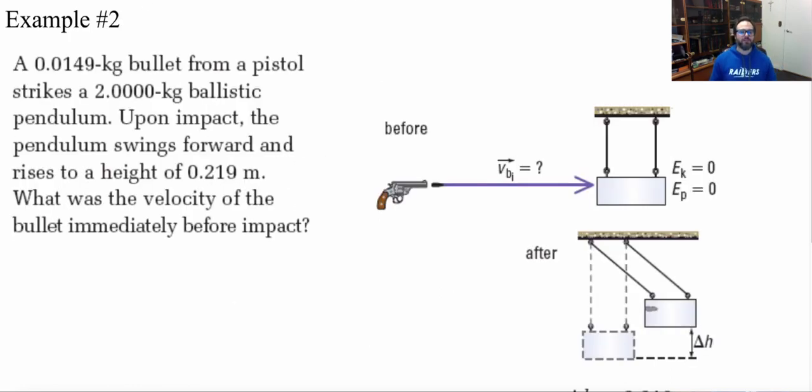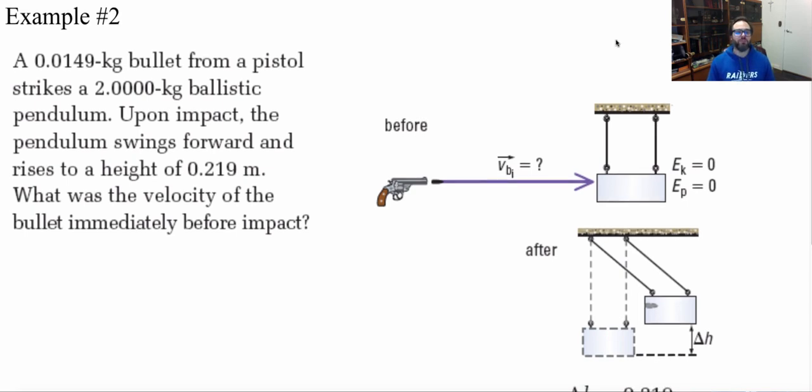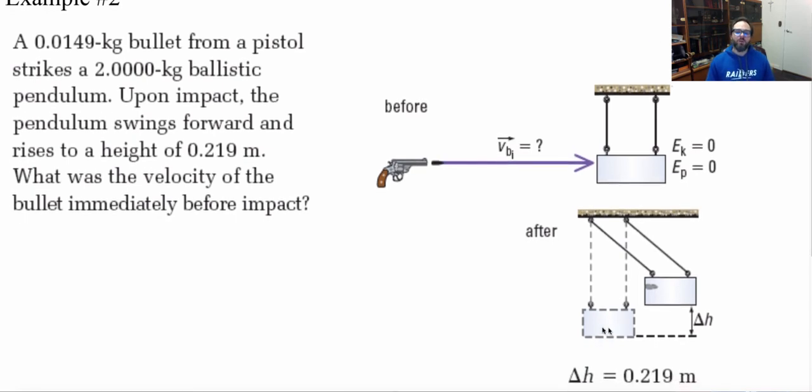So let's take a look at one of these ballistics examples. So here I have a small mass of a bullet from a pistol strikes a two kilogram ballistic pendulum. Upon impact, the pendulum swings forward and rises to a height of 0.219 meters. What is the velocity of the bullet immediately before the impact? So first thing I must do if remember, my step one is we must find the velocity of this brick and what it's moving at.